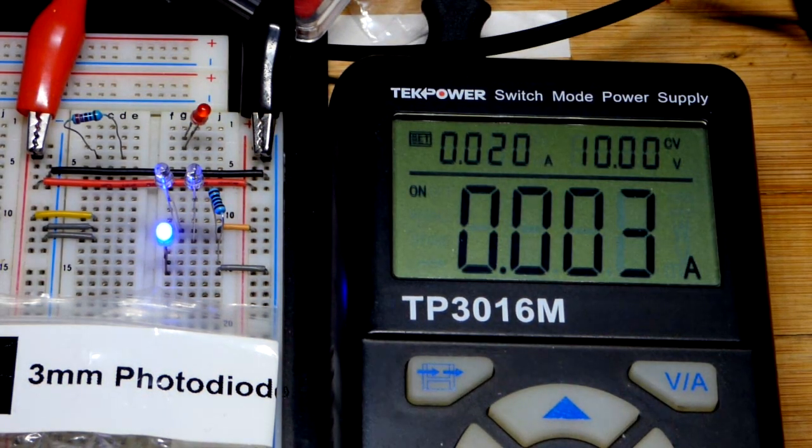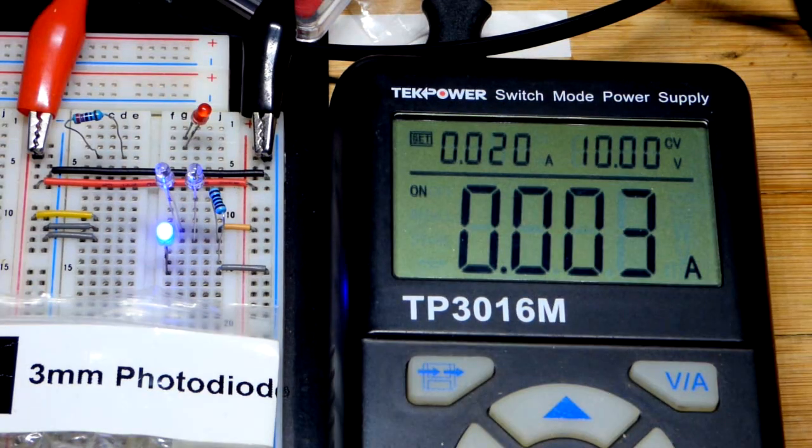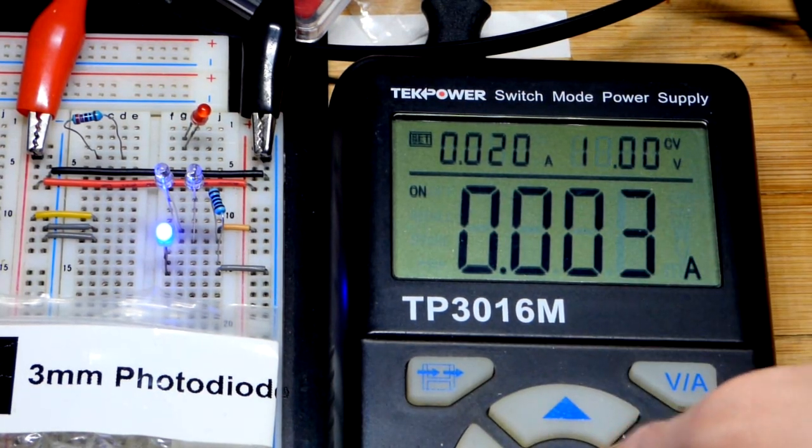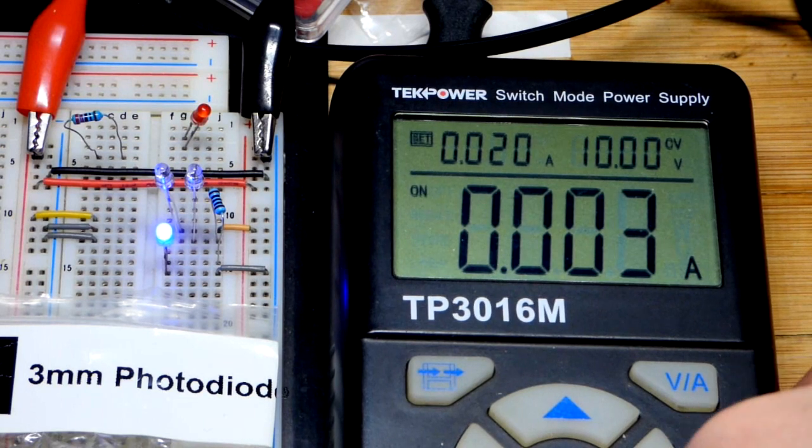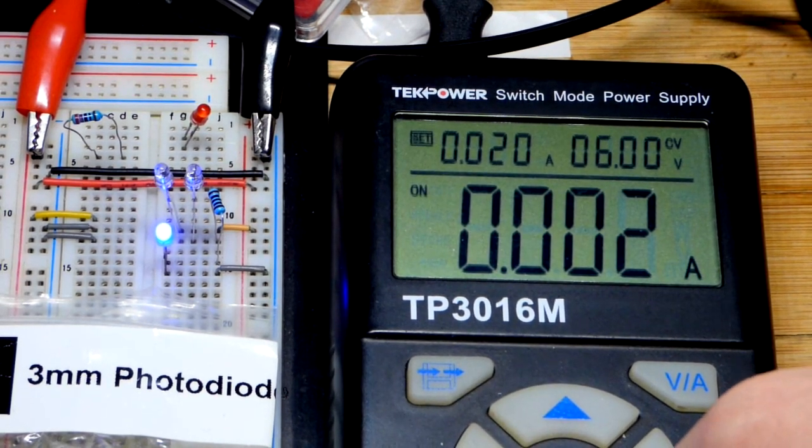20 milliamps of current. But as you can see we got 10 volts. We have probably the same amount of current flowing as when we lower it to 5 volts.